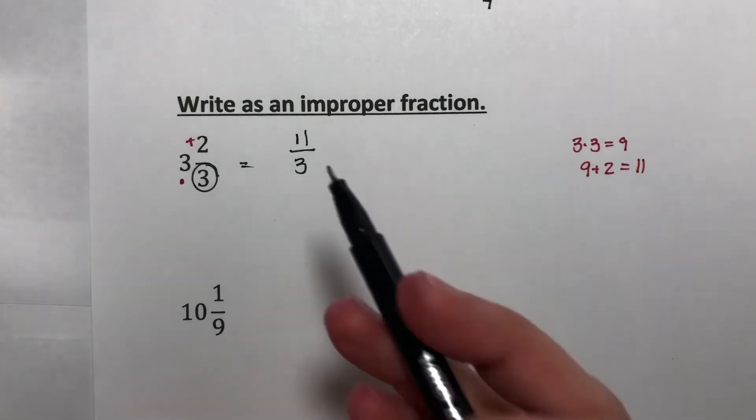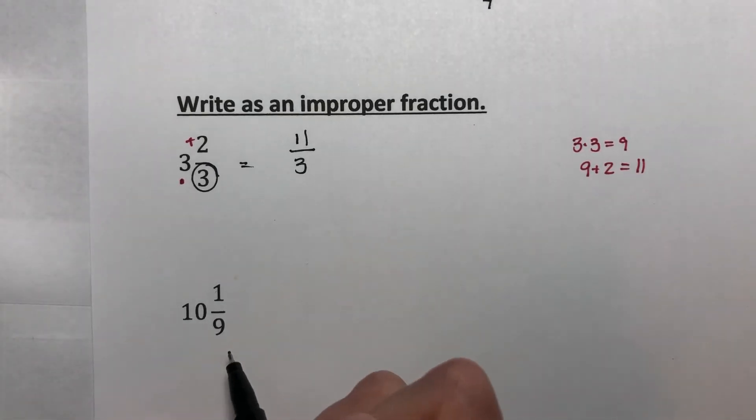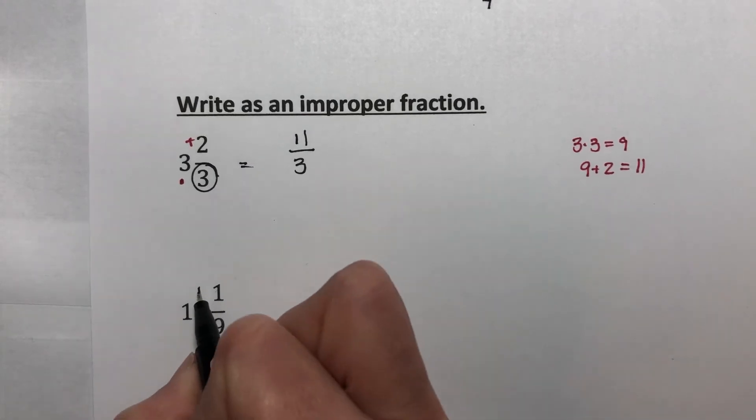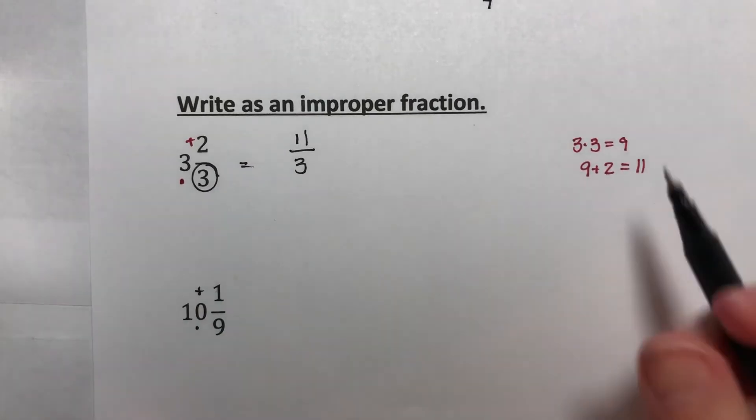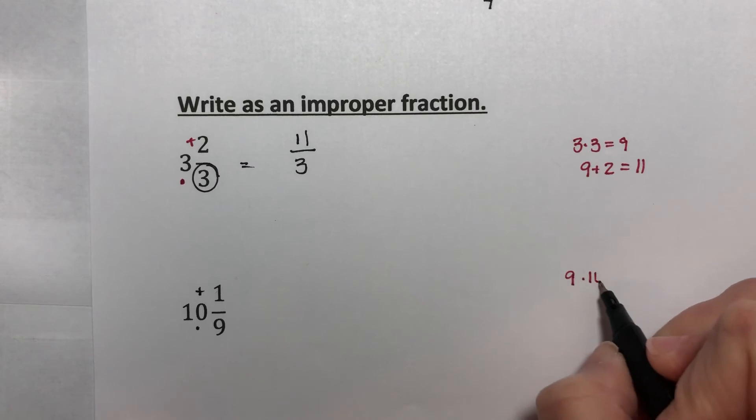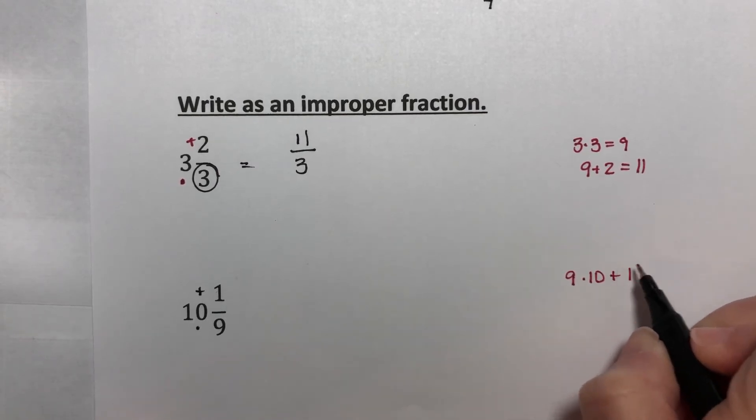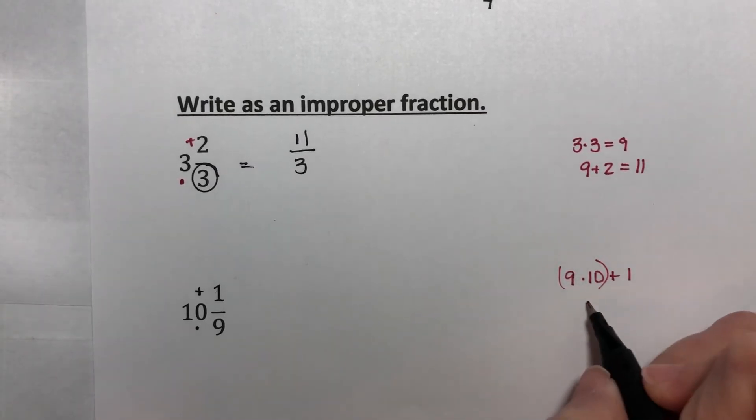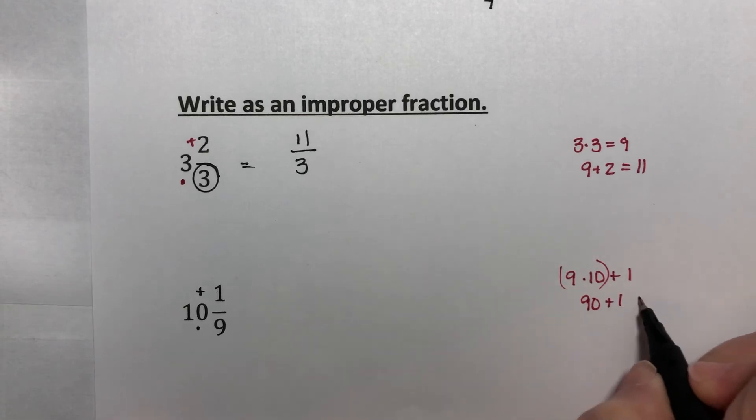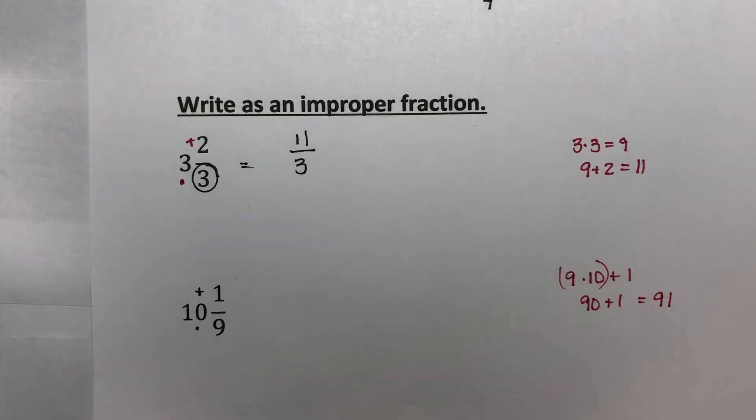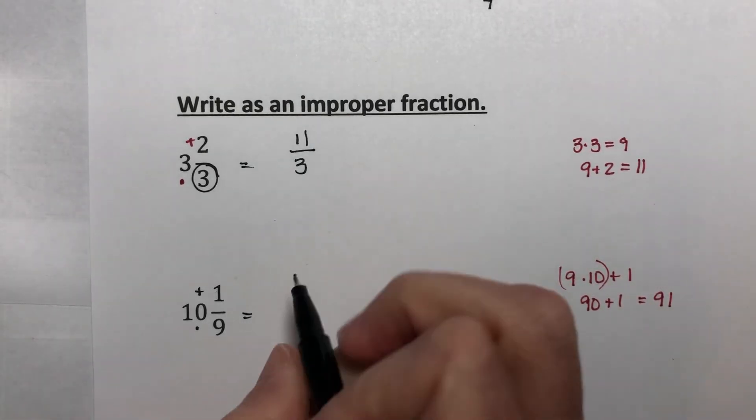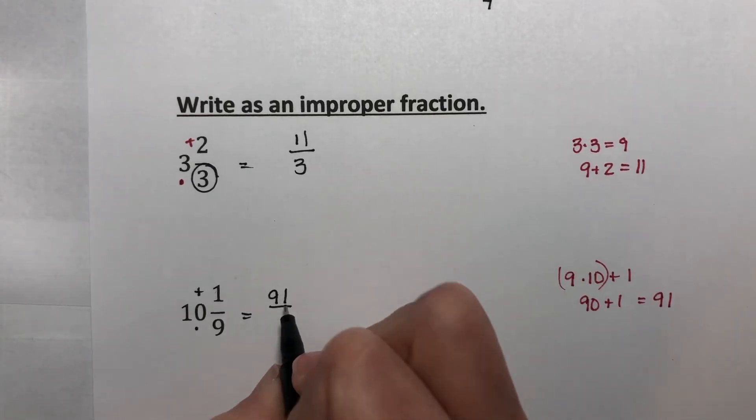Let's do this again. Around the world. 9 times 10 plus 1. So I have to do this part first. That's 90 plus 1. 91. So this would be the same thing as 91, and you keep that denominator ninths.